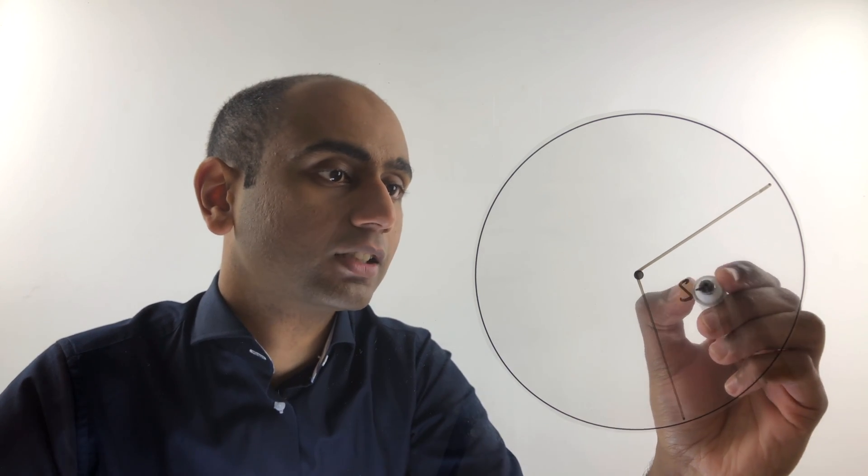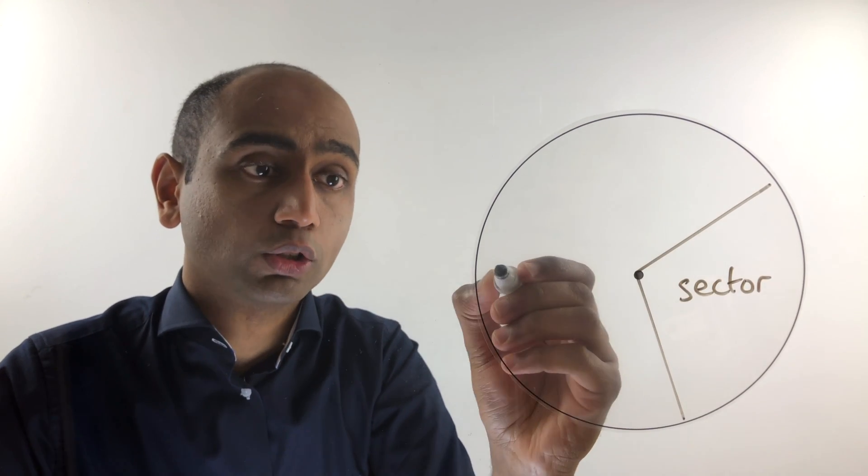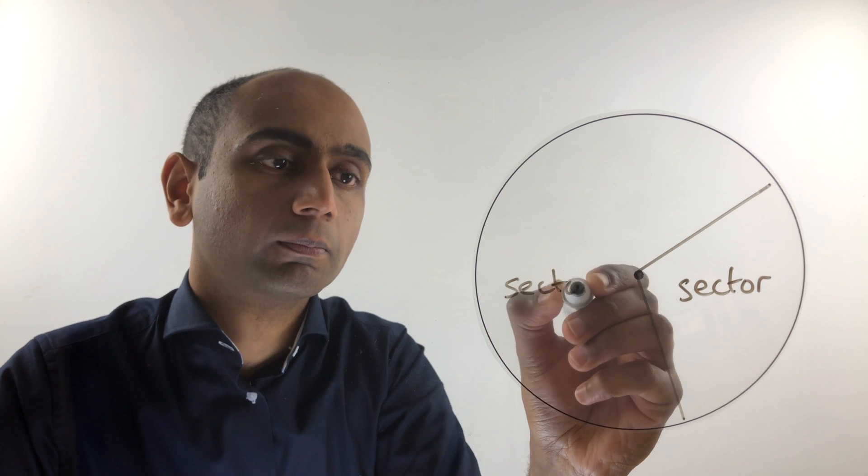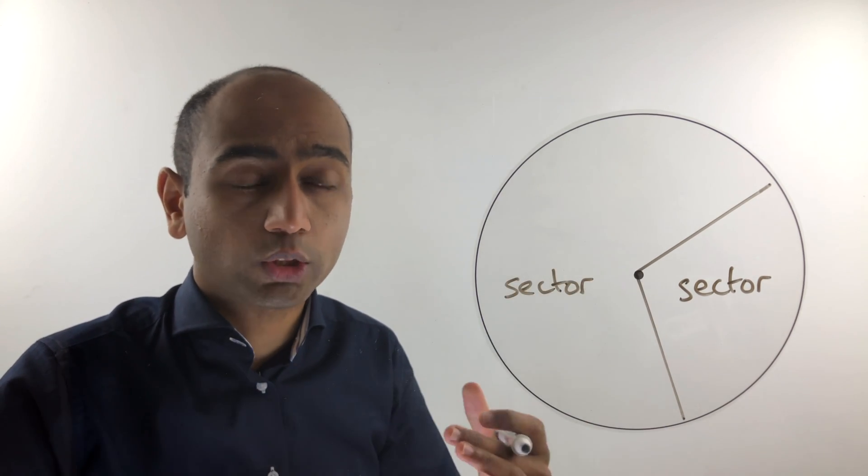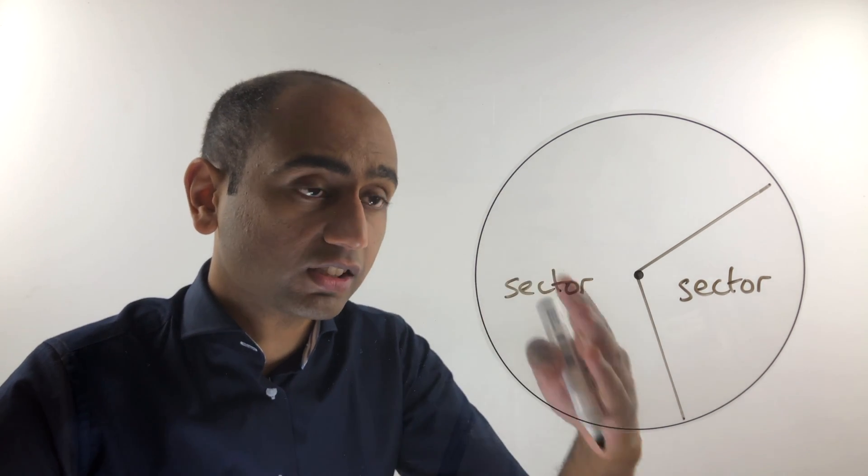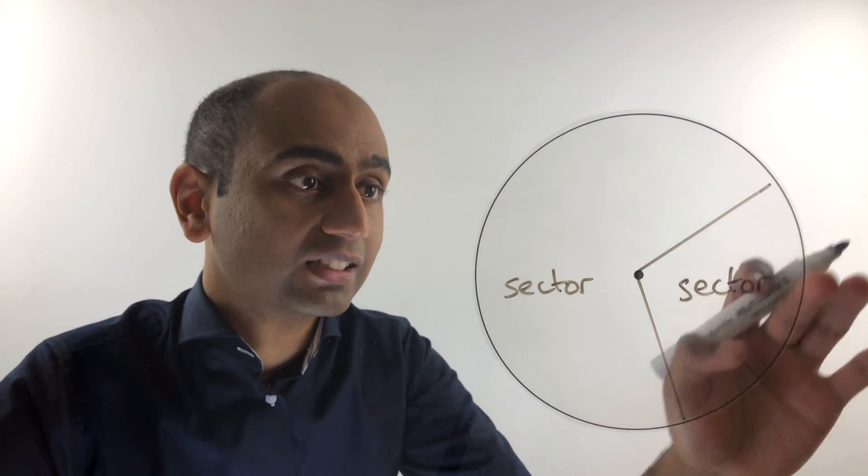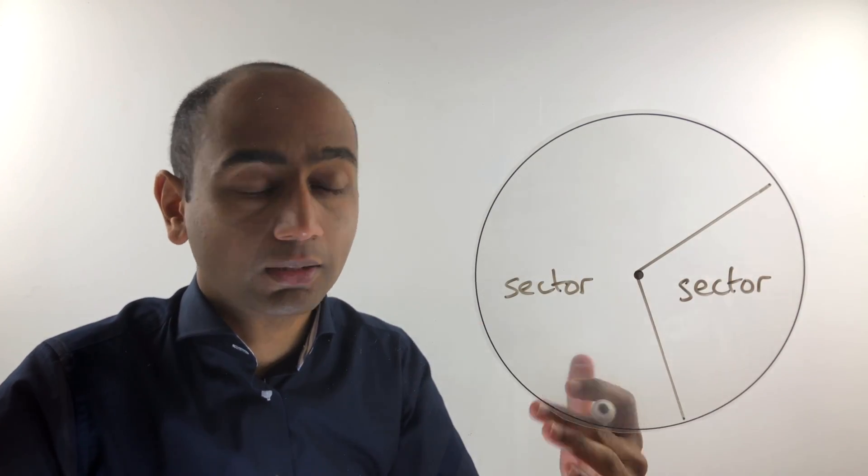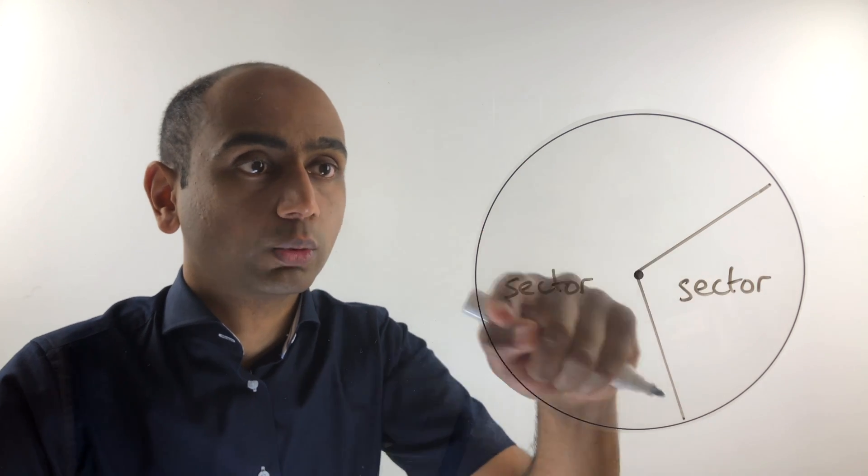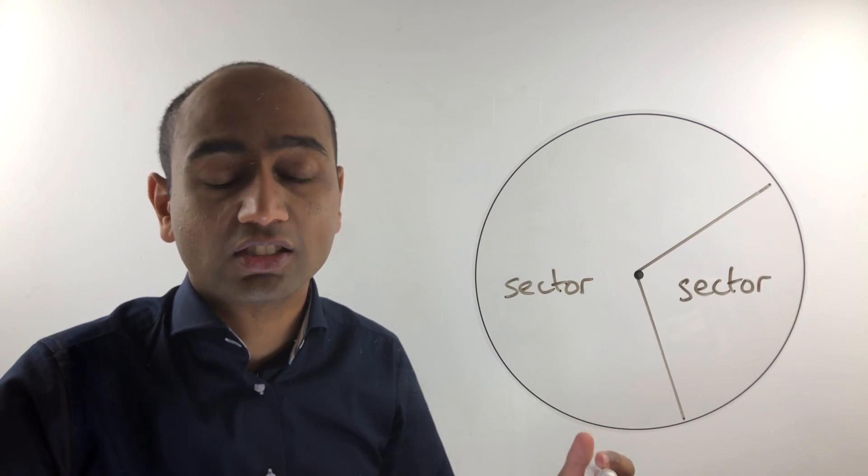This is called a sector, and this is also called a sector. So a sector is what you obtain when you slice a circle to the centre. This sector here is called a minor sector because it's the smaller one, and this one here is called a major sector.